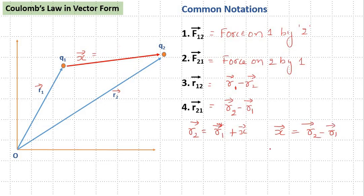This is basically nothing but r21 vector. So this is r21 vector and the distance between q1 and q2 in this particular case can be given as mod of r21 vector.